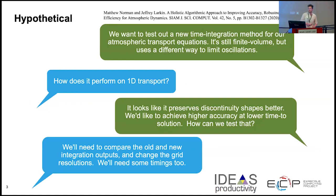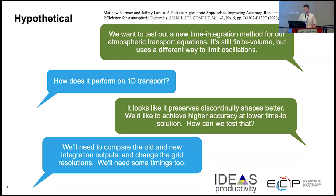Let's begin with a hypothetical situation where you have a science discussion and you decide you want to test out a new time integrator method for an atmospheric transport equation. It's finite volume, but uses a different way to limit the oscillations that can occur and lead to instability. The conversation is: how does it work on 1D transport? Maybe it preserves shapes a little bit better. So we want to make this work inside of our code and see how it will do.